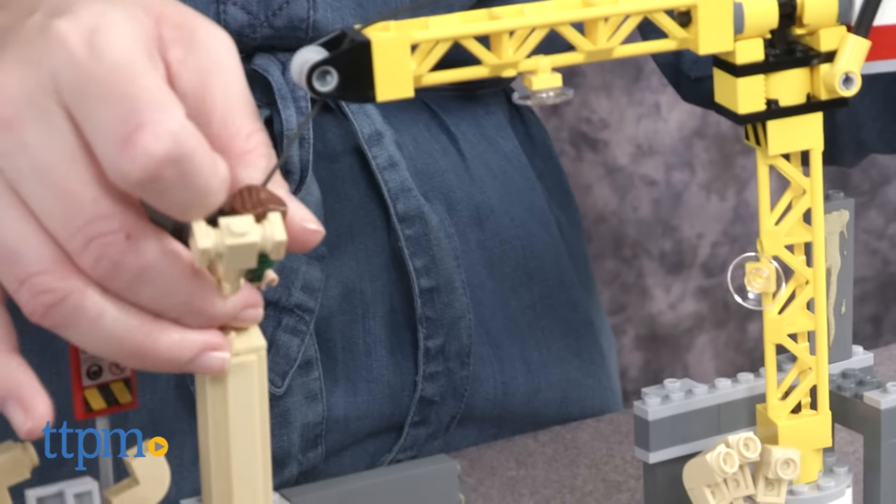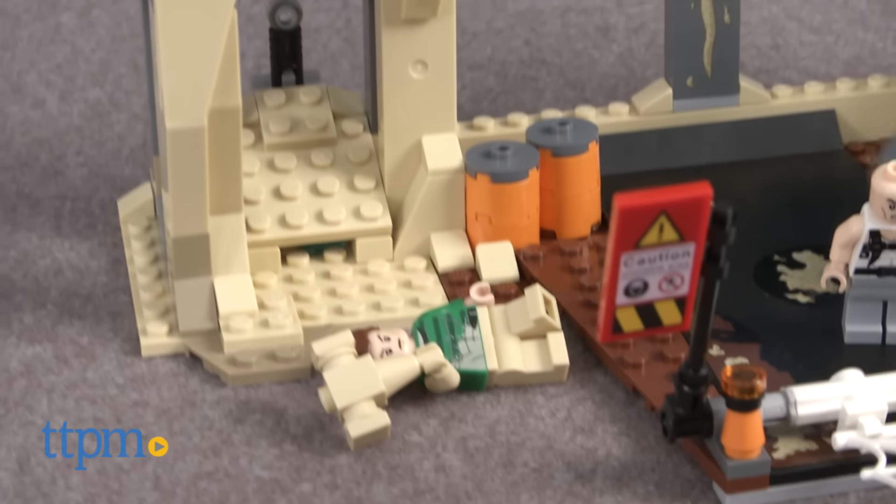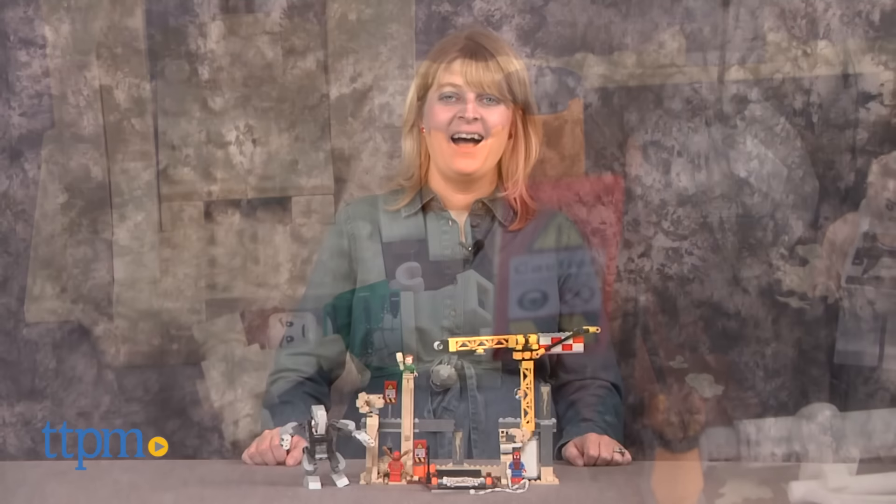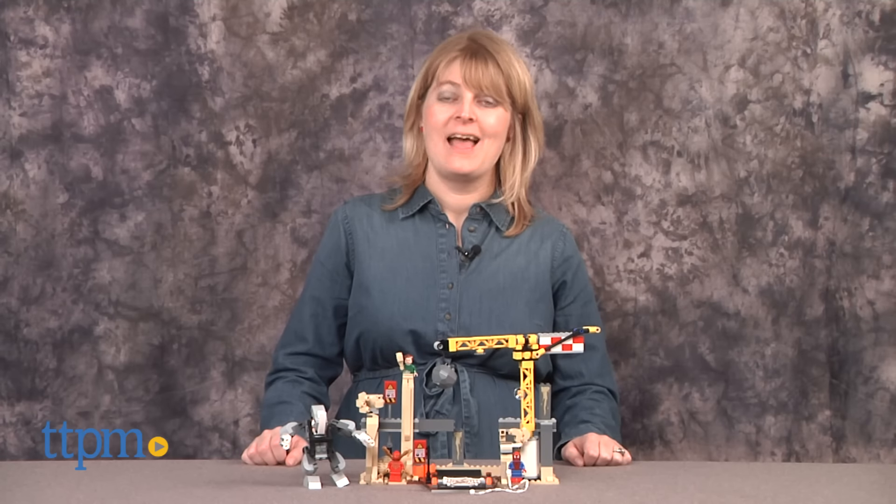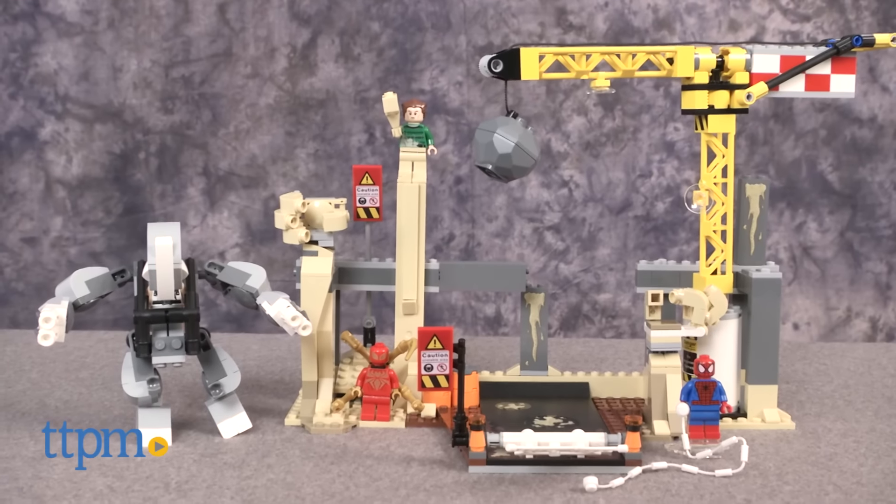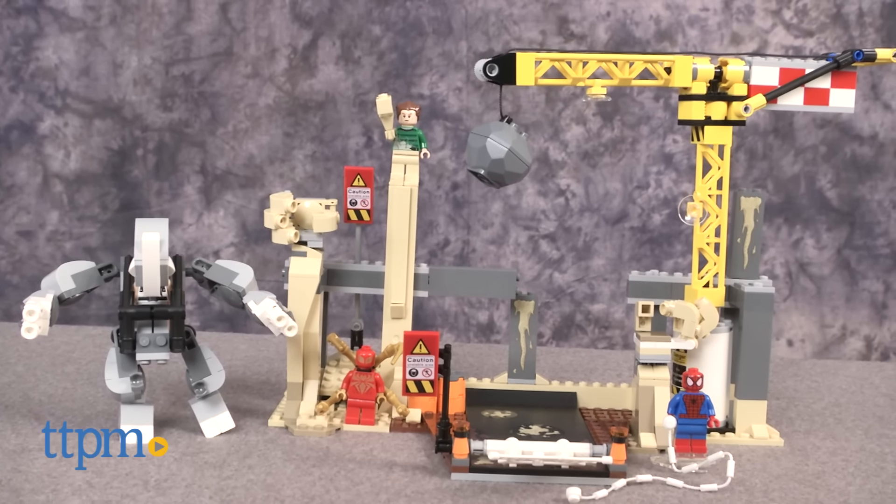Villains Rhino and Sandman have teamed up, and it's up to Spider-Man and LEGO Builders to stop them. Hi, I'm Laurie from TTPM, here with the 386-piece LEGO Marvel Super Heroes Rhino and Sandman Super-Villain Team-Up Set.